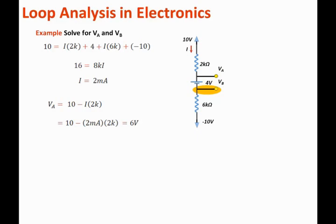Next, we need to solve for VB. One way to solve for VB is to state that it equals the voltage at the top, which is VA, minus the voltage drop of 4 volts. So VB equals VA minus 4. Since VA equals 6 volts, then VB equals 2 volts.